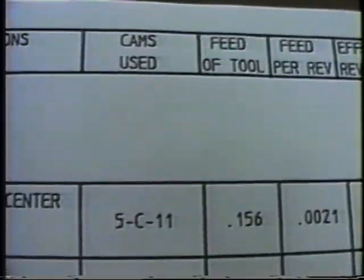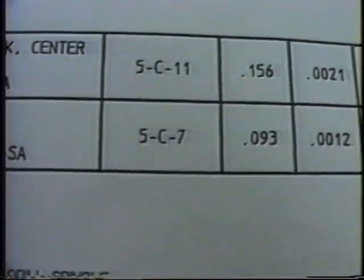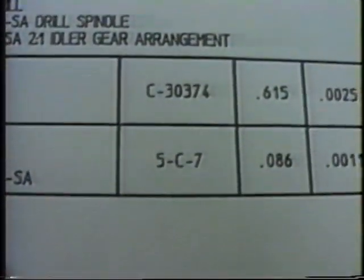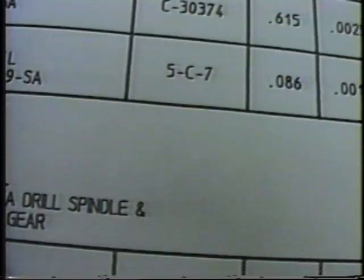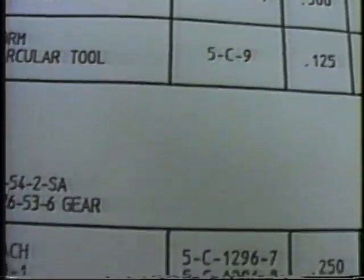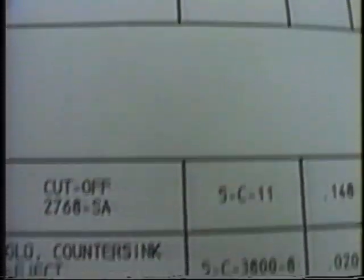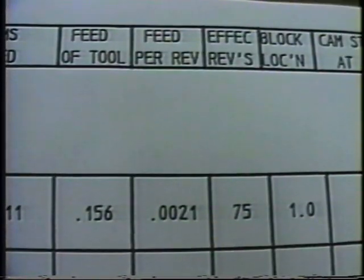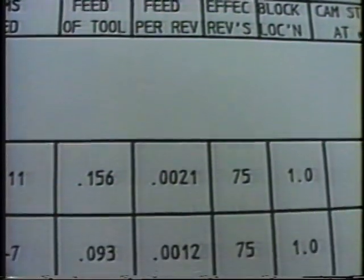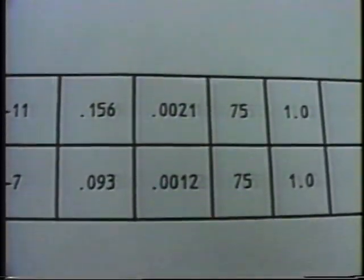Moving progressively to the right of the operations column, we see the cams used listed numerically. Cams used for each operation are stamped with their respective number. The feed of tool is then listed for each operation. This does not necessarily represent the rise on the cam, as that could be affected by block location, but the resultant feed of the tool.